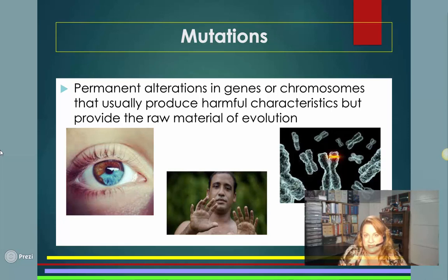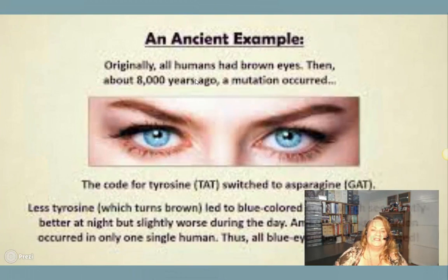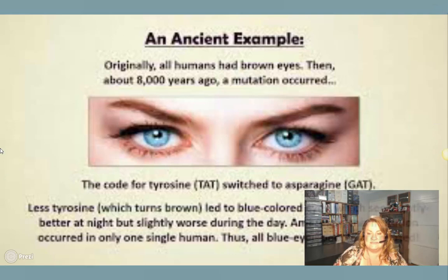Originally all humans had brown eyes. Then about 8,000 years ago, a mutation occurred — the code for tyrosine switched to asparagine. Less tyrosine led to blue-colored eyes, which see slightly better at night but slightly worse during the day. Amazingly, this mutation occurred in only one single human — thus all blue-eyed people are related. There are also people with yellow eyes and even purple eyes.